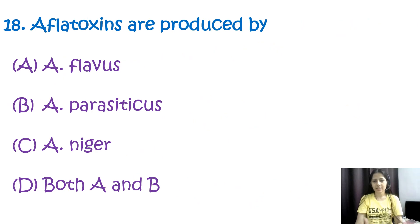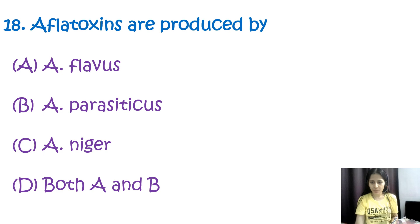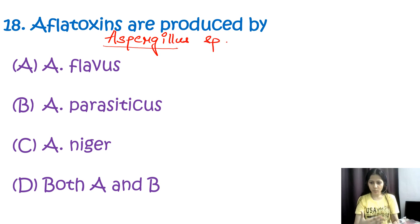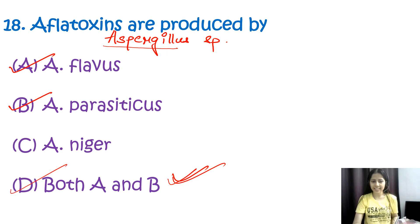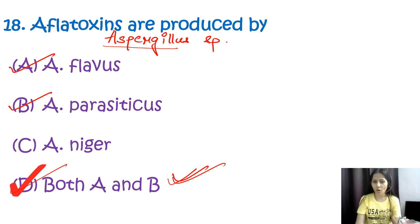Question number eighteen: aflatoxins are produced by — options are Aspergillus flavus, Aspergillus parasiticus, Aspergillus niger, or both A and B. Aflatoxin is a toxic compound produced by Aspergillus species, specifically Aspergillus flavus and Aspergillus parasiticus. These fungi can contaminate various agricultural crops, tree nuts, and corn, especially under warm and humid environmental conditions. The correct option is D, both A and B.